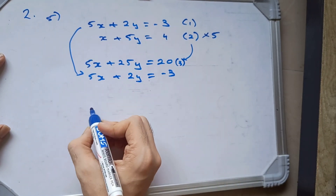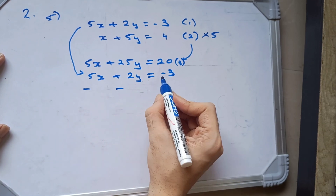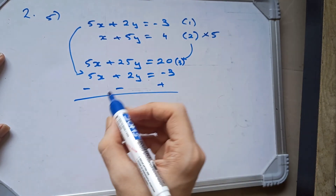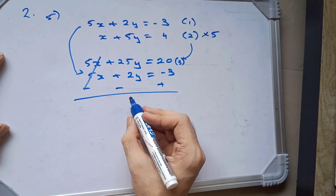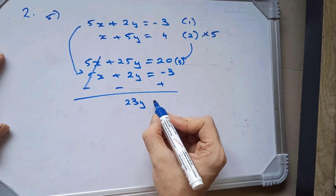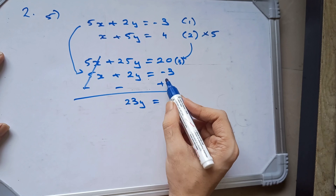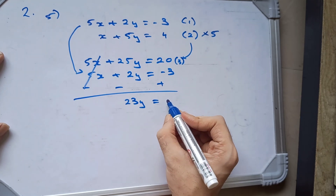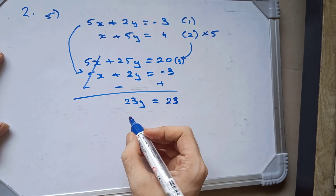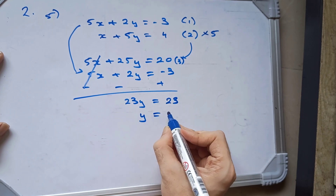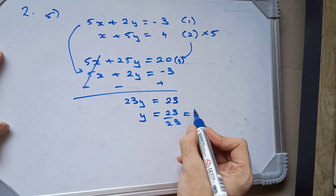It is equal to minus 3. And since we are going to be subtracting here, plus is minus, minus is plus. This gets cancelled out. Here is 23y. Plus 20 and plus 3, it is plus so it will be 23. Since it is plus 3, we will get y which is equal to 23 upon 23, which is 1.